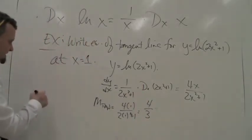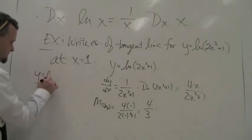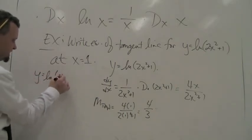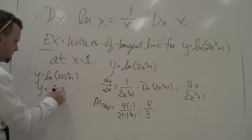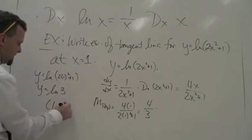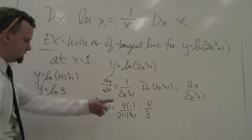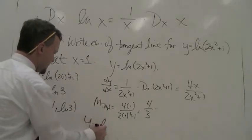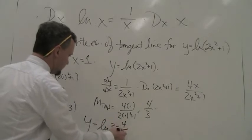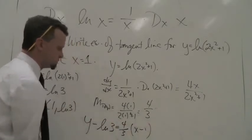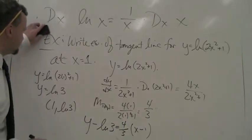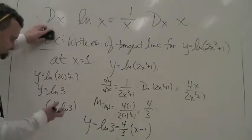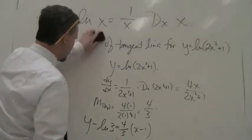You need a point. To get a point, take 1 and plug it in: the natural log of 2 times 1 squared plus 1. y equals the natural log of 3. So you have a point at (1, ln 3). You've got a point, you've got a slope, you've got a line: y minus ln 3 equals (4/3)(x minus 1). And you're done. Very simple — the derivative is not a complicated rule.